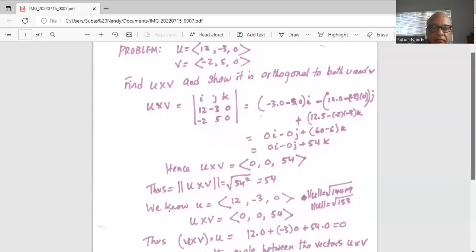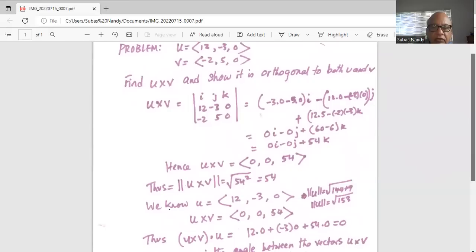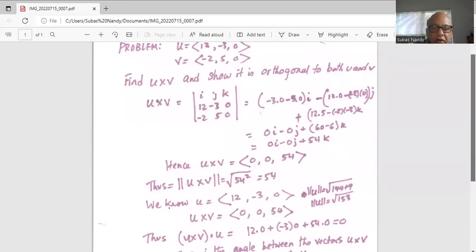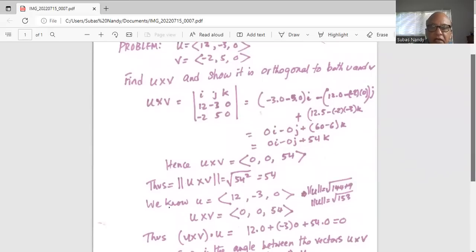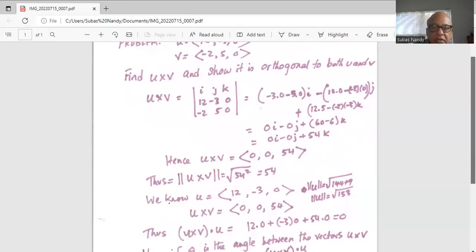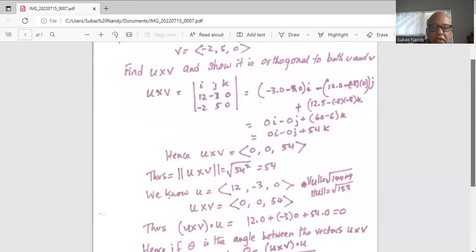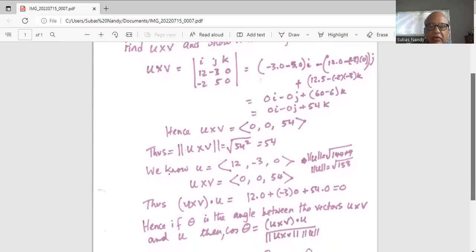And we also know u cross v is 0, 0, 54, so you multiply the directional numbers. 12 times 0 is 0, minus 3 times 0 is 0, plus 54 times 0 is 0.